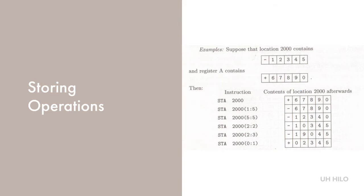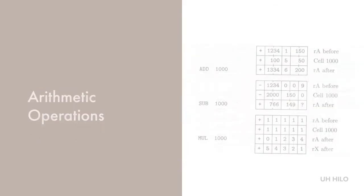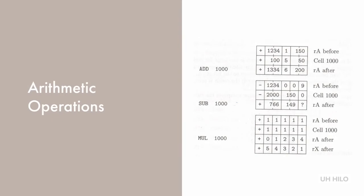STJ stores the contents of the jump register, and recall that this value is always positive. STZ stores the value of plus 0 at the memory address M. MIX allows us to perform operations of adding, subtracting, multiplying, and dividing. It also allows us to give a field specification so we can perform these operations on part of a word.